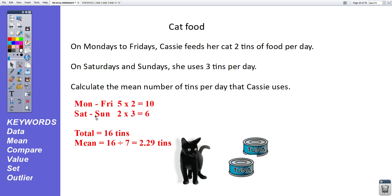Okay, let's see if you've got this right. Monday to Friday, she uses two tins per day. That's five days. So over those five days, she uses ten tins. Saturday and Sunday, three tins per day. That's two days, two times three, six tins over the two days. So in total over a week, she uses 16 tins. So the mean number of tins per day, 16 tins divided by seven days, 2.29 tins per day.